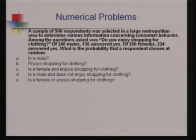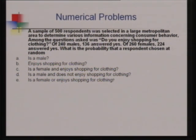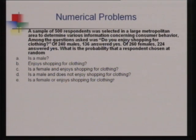Now let us solve a numerical example. A sample of 500 respondents was selected in a large metropolitan area to determine consumer behavior. Among the questions asked was: do you enjoy shopping for clothing? Of 240 males, 136 said yes. Of 260 females, 224 answered yes. We will build a contingency table from this data: total is 500, males are 240, females are 260.